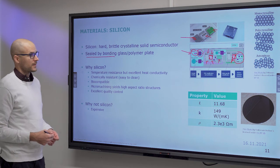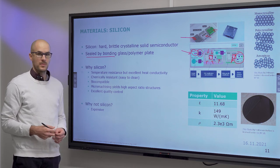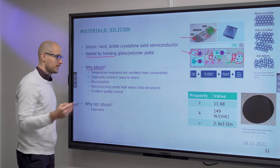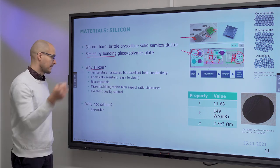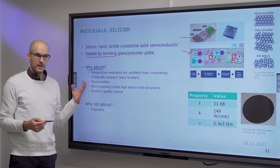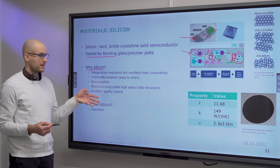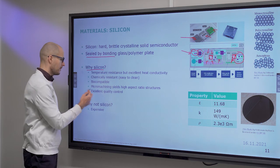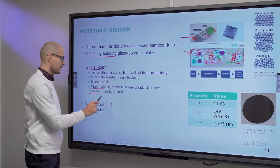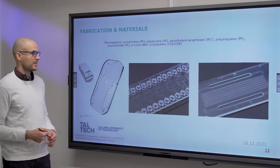Why would you choose silicon? The reasons are similar to glass, except that silicon is not transparent. But it is highly resistant to chemicals and temperature, has good heat conductivity, is biocompatible, you can make high aspect ratio structures from it, and quality control is excellent. The only problems are that it is expensive and not optically transparent.